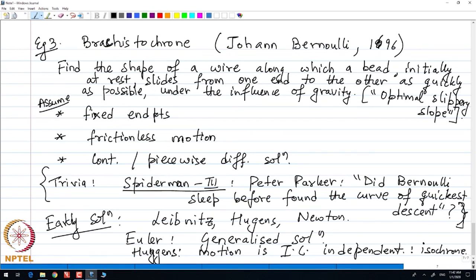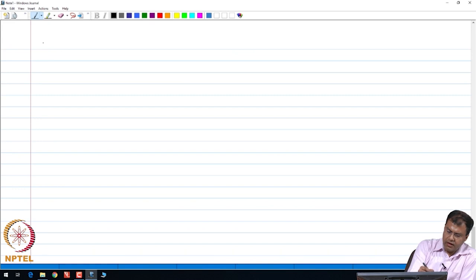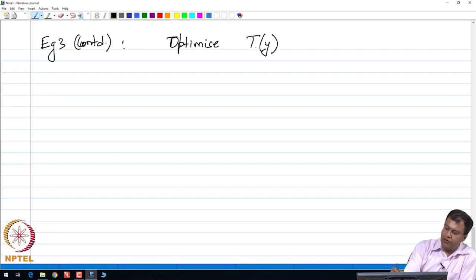Just a bit of setup in this problem. In this case, example 3 continued, we see that the quantity that we are trying to optimize or minimize is the total time in which the particle slides to the bottom of the curve. We are trying to optimize the following integral, which is the total length of the curve divided by the velocity of the curve, which is a function of the arc length itself.